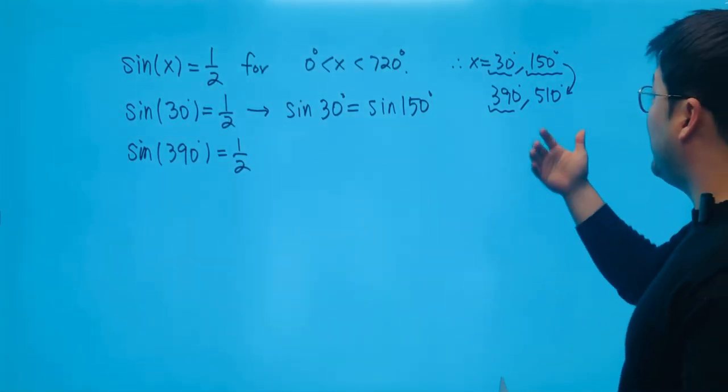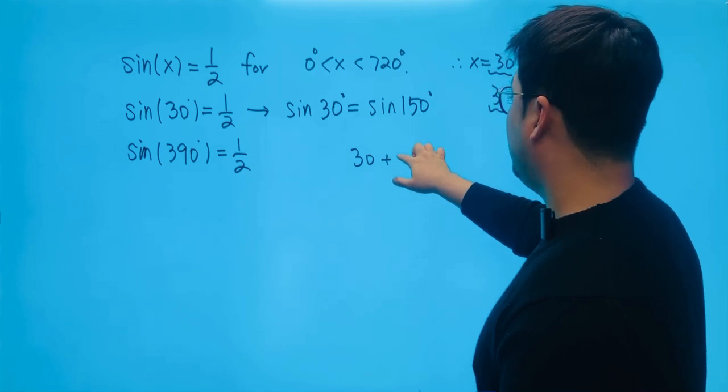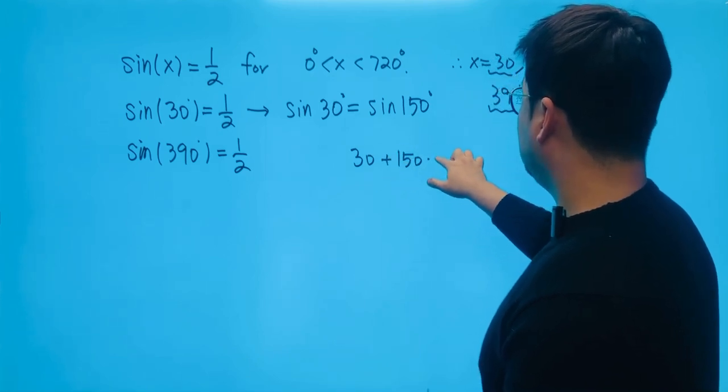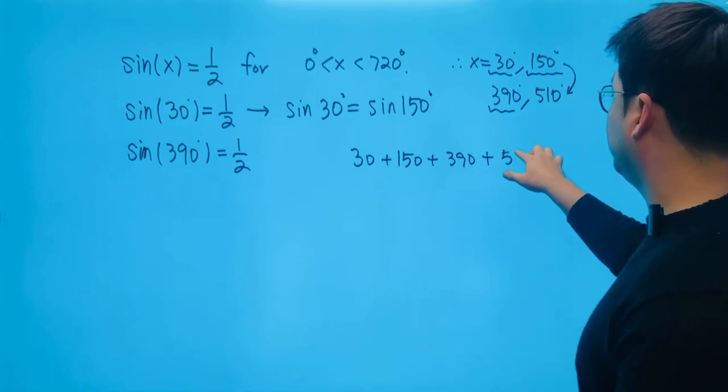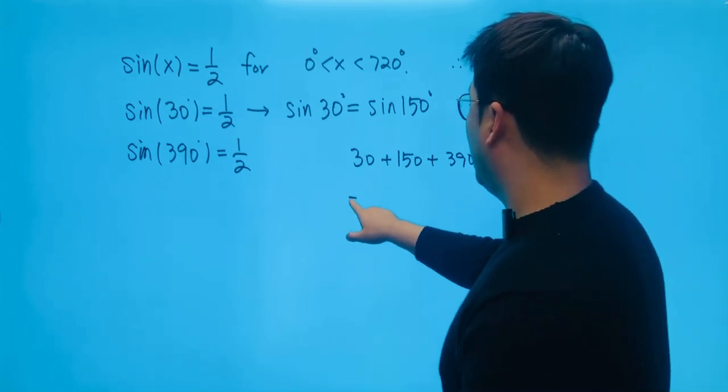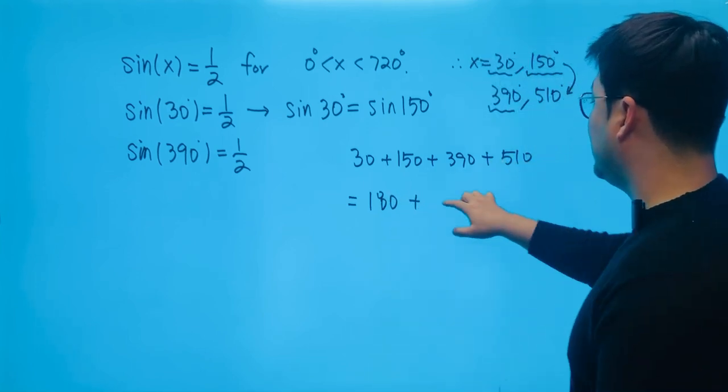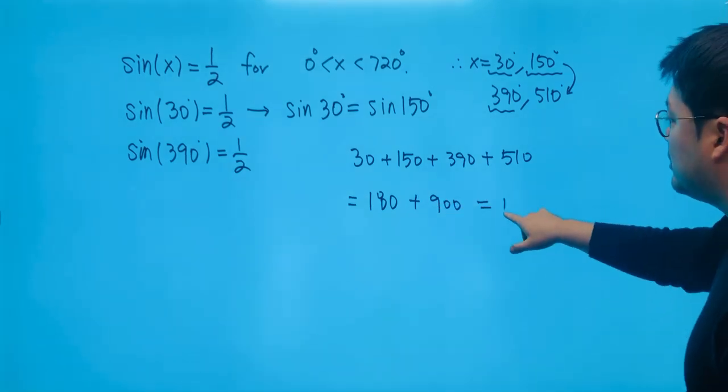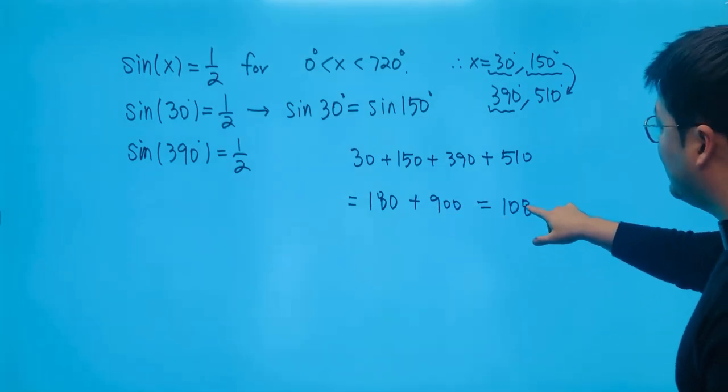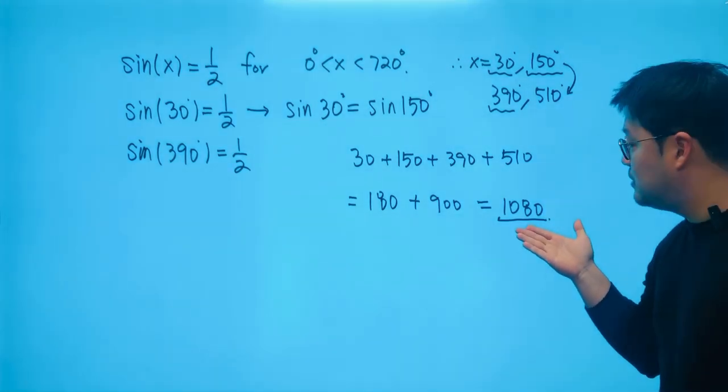So we just have to add up all those numbers. All right. So 30 plus 150 plus 390 plus 510. That becomes 180. And this becomes just 900. So we're adding up these values to come up with 1080. And this will be the answer for the question.